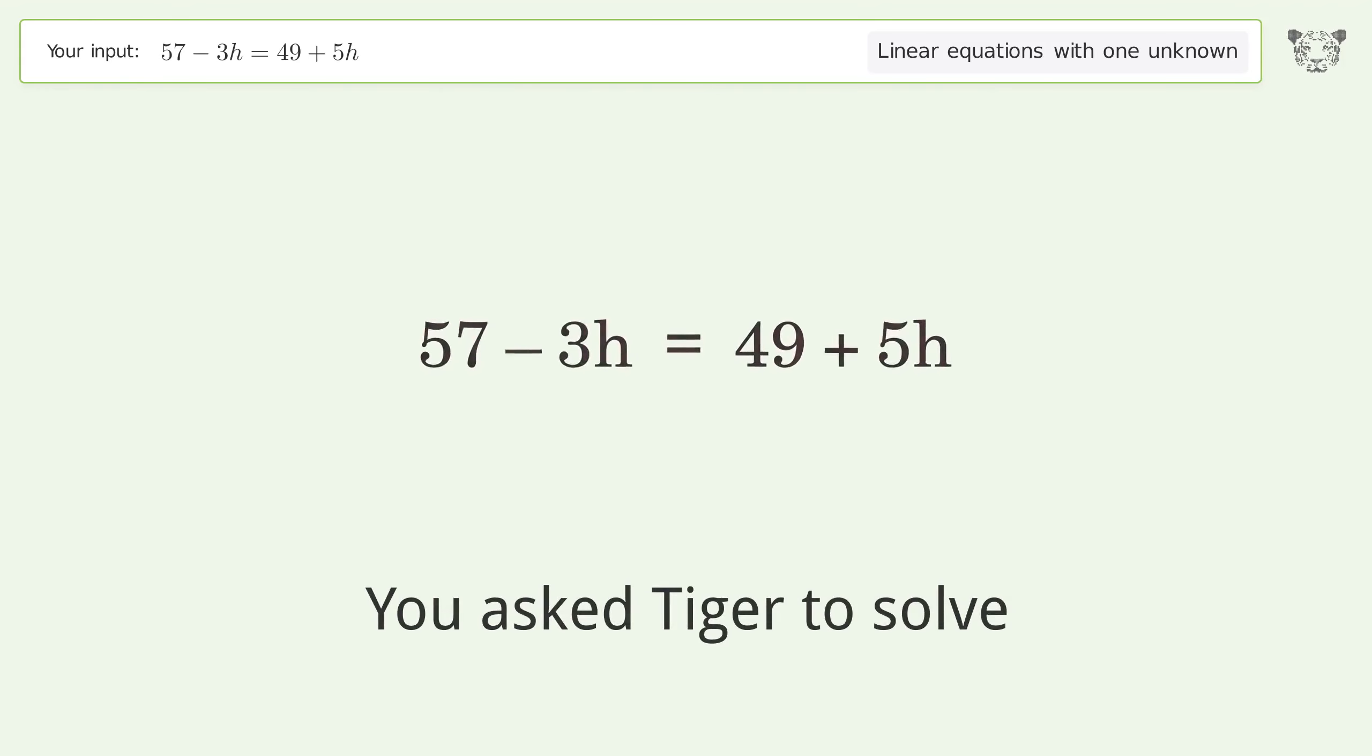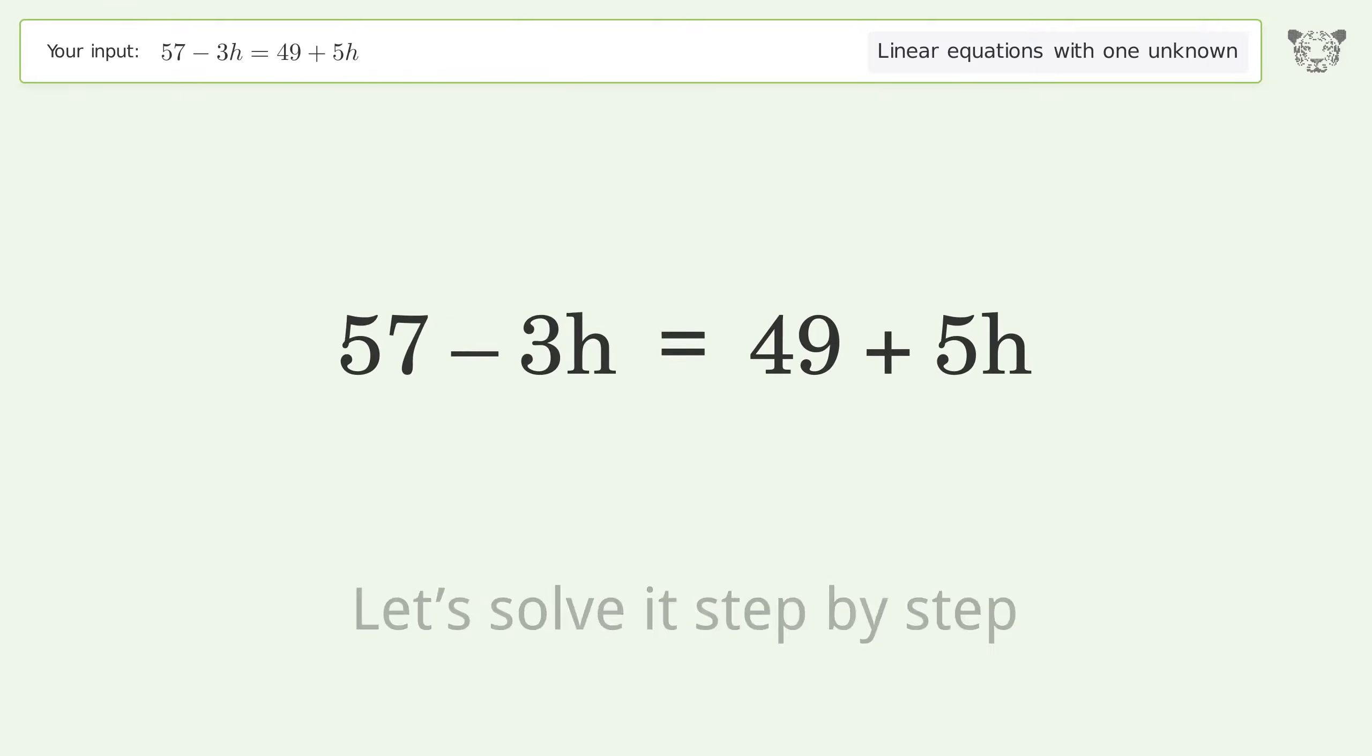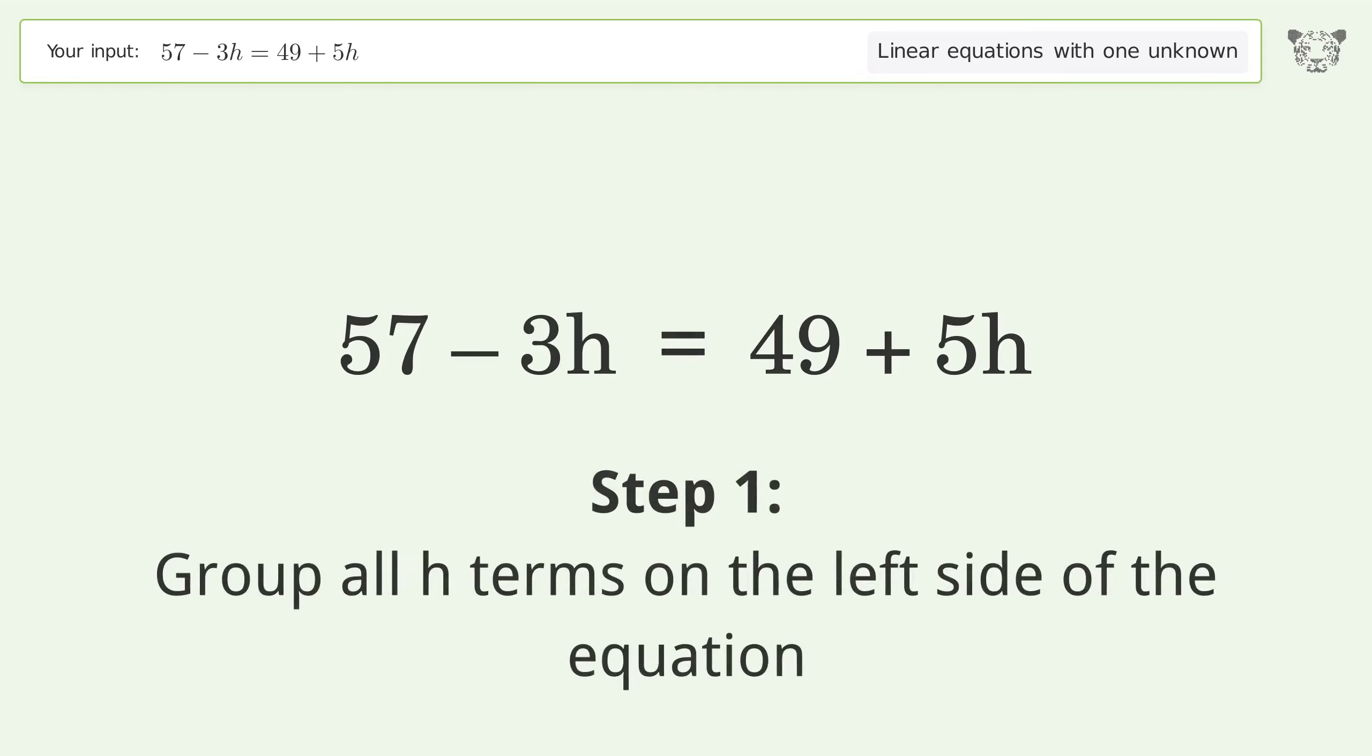You asked Tiger to solve this linear equation with one unknown. The final result is h equals 1. Let's solve it step by step. Group all h terms on the left side of the equation.